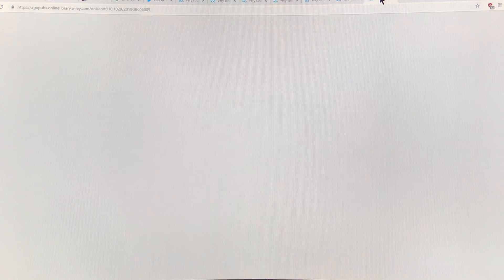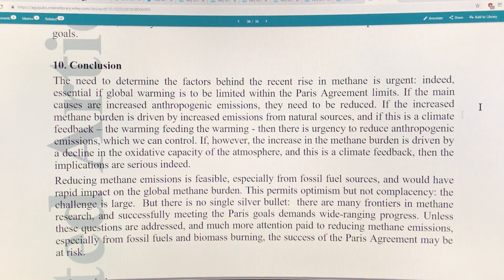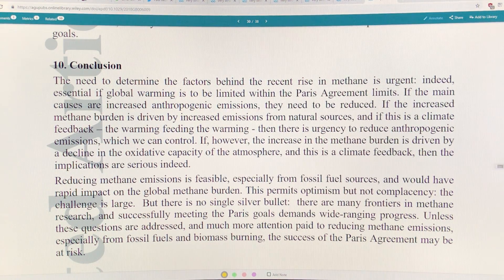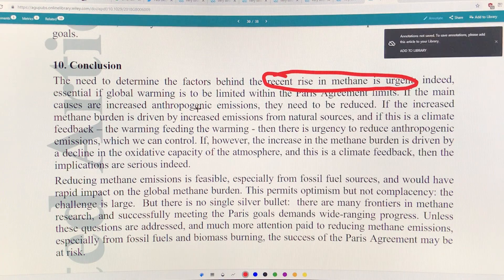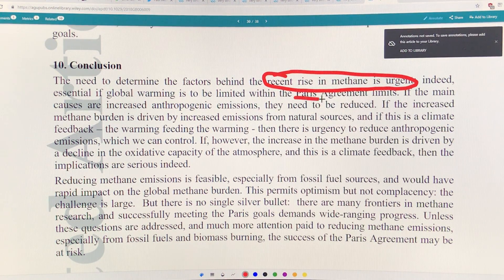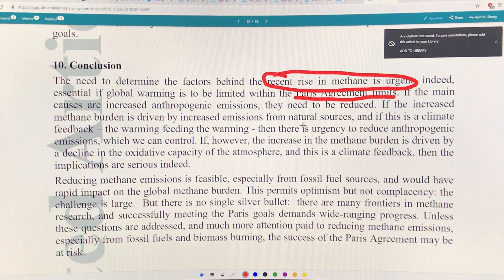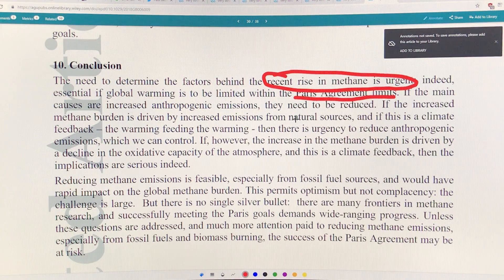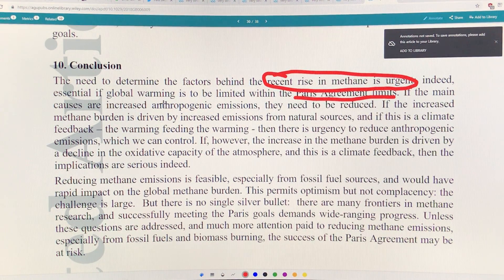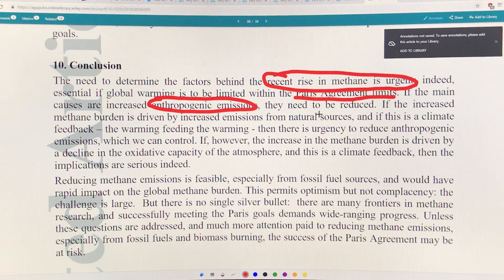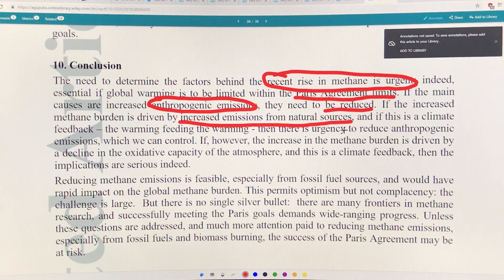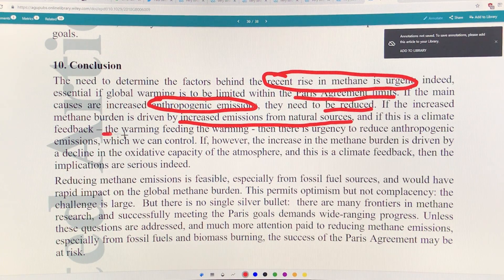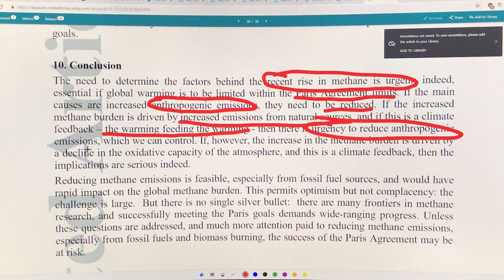The conclusions here: The need to determine the factors behind the recent rise in methane is urgent and indeed essential if global warming is to be limited within the Paris agreement. We have to have targets, but we're in an emergency situation. We have to respond accordingly and we're not doing that. If the main causes of the increase of methane are anthropogenic, human-caused emissions, they need to be reduced. If the increased methane burden is driven by increased emissions from natural sources, these are feedback sources. If this is a climate feedback, the warming feeding the warming, then there's urgency to reduce anthropogenic emissions which we can control.